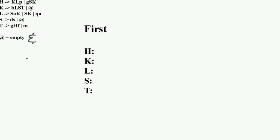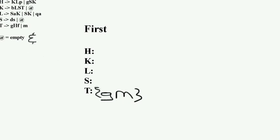Usually how I start first is I find the easiest states. What does 'easiest states' mean? The ones that contain terminals immediately and don't involve other states are usually the easiest. So if we start with T, we get g and m, and we're done with that.